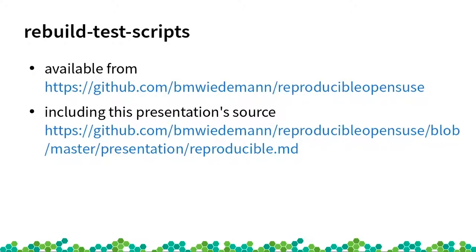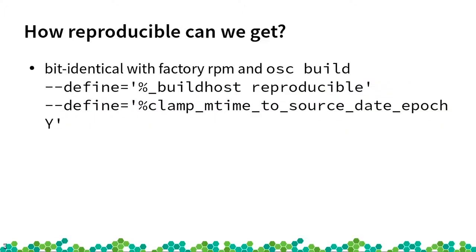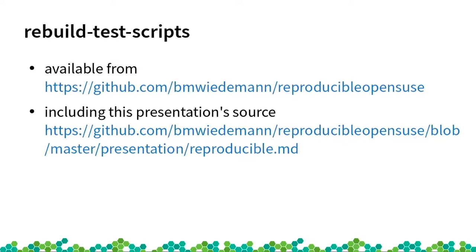If you want to test out if a package builds reproducibly or why it doesn't, you can use my git repo which is nicely named to remember — reproducible open source. There's also this presentation's source code in markdown in there, using a nice script called odp-down to convert it to OpenOffice. Apart from that there's also a wiki page on the openSUSE wiki giving some pointers to the upstream reproducible-builds.org website and some more hints.